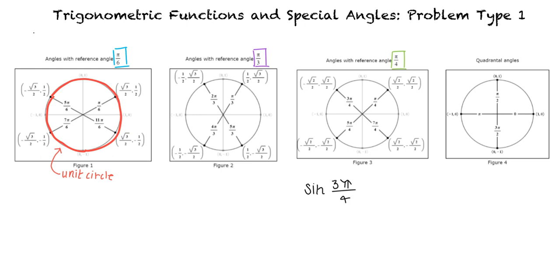Figure 3 shows that the terminal side of 3 pi over 4 intersects the unit circle at negative square root 2 over 2 comma square root 2 over 2. The cosine of the angle is the x coordinate of this point and the sine is the y coordinate. This tells us that the sine of 3 pi over 4 is equal to the square root of 2 over 2.